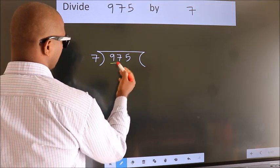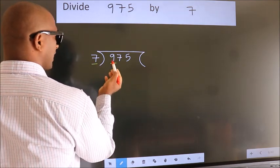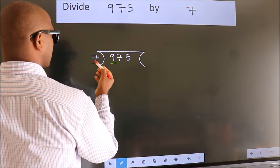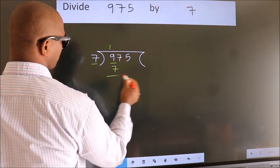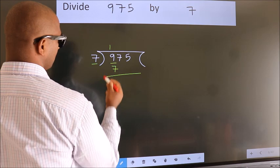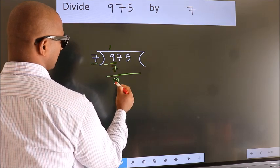Here we have 9. Here 7. A number close to 9 in 7 table is 7 once 7. Now we should subtract. We get 2.